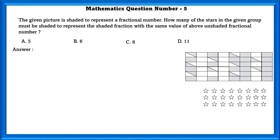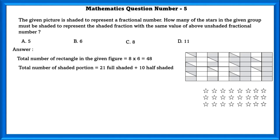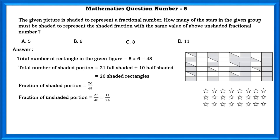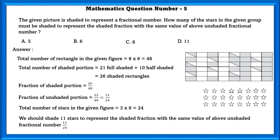Mathematics question number 5. The given picture is shaded to represent a fractional number. How many of the stars in the given group must be shaded to represent the same value as the above unshaded fractional number? The total number of rectangles in the given figure is 48. The total number of shaded portions is 26, so the fraction of shaded portion is 26/48, while the unshaded portion is 11/24. The total number of stars is 24, so we must shade 11 stars to represent 11/24.